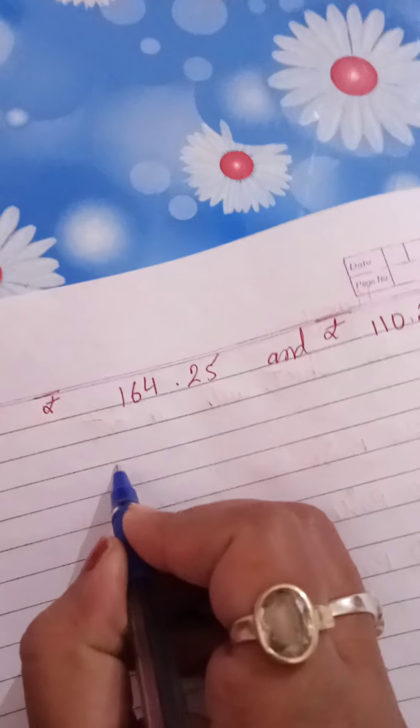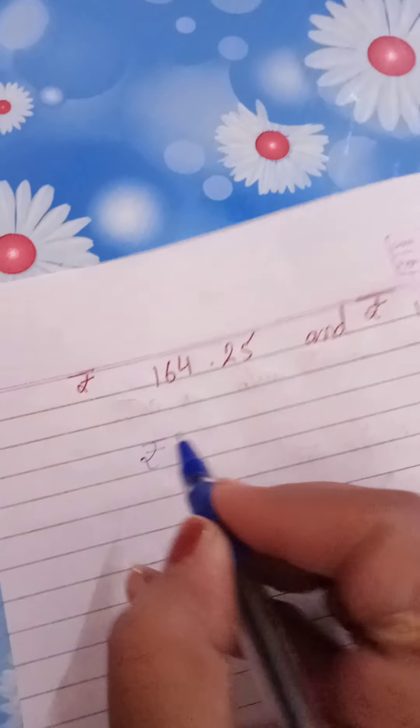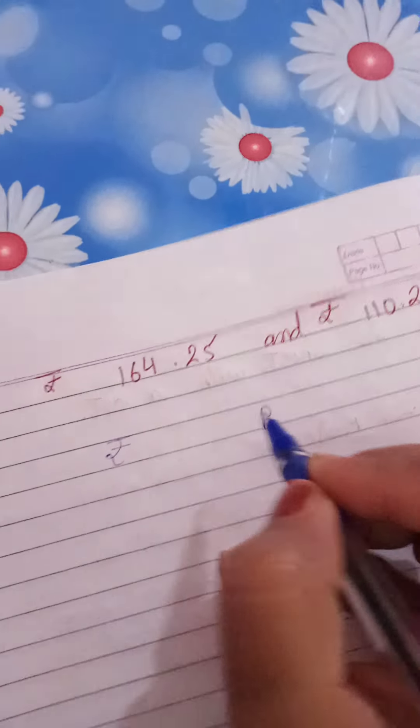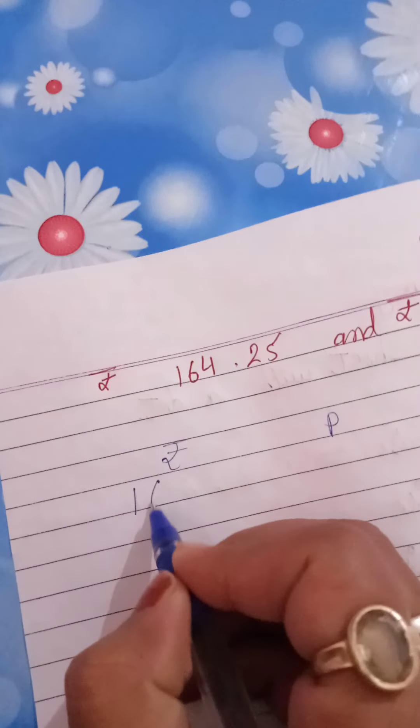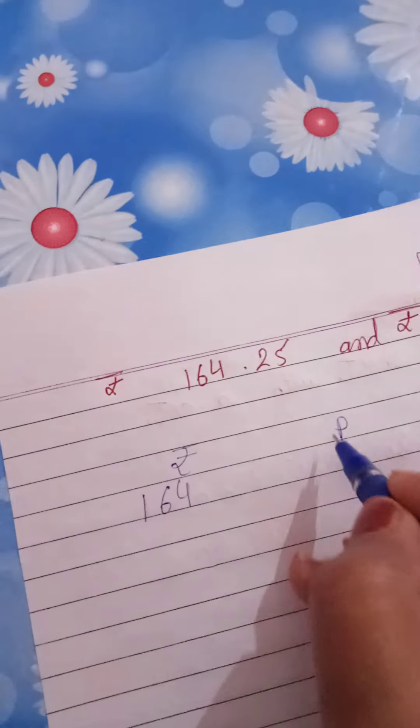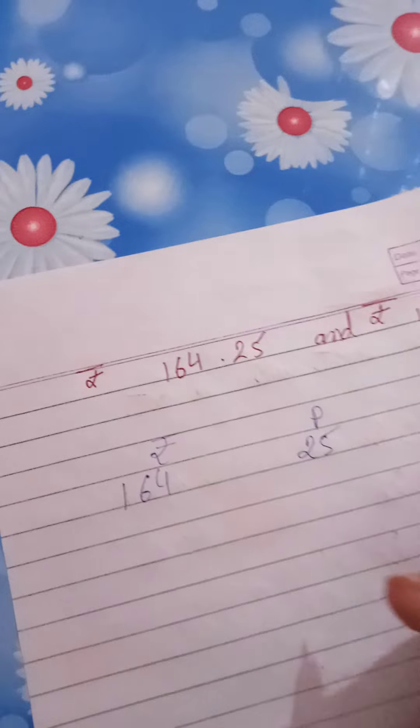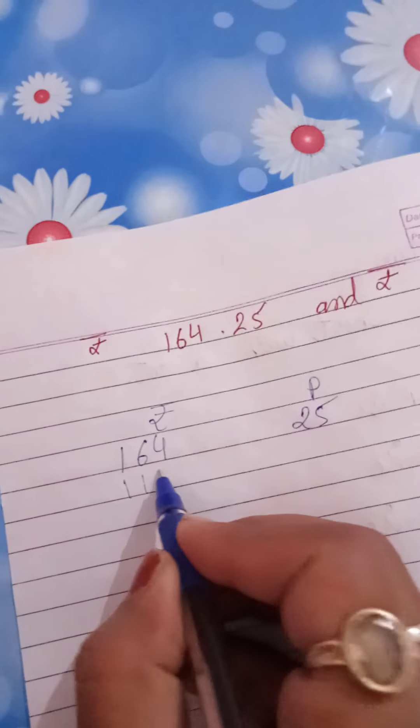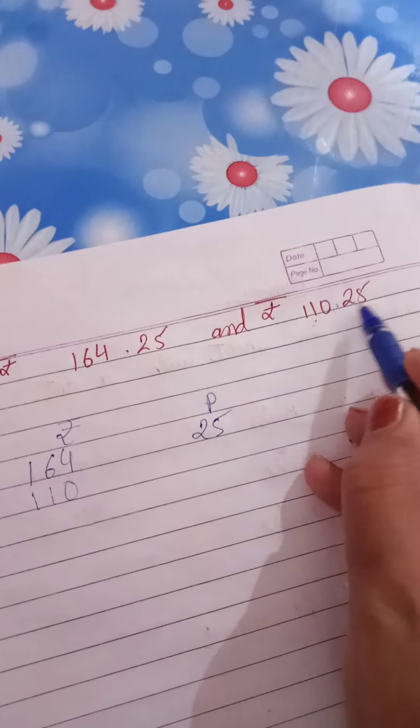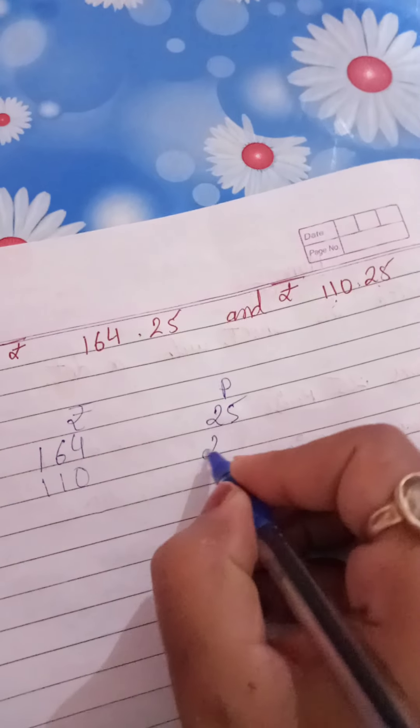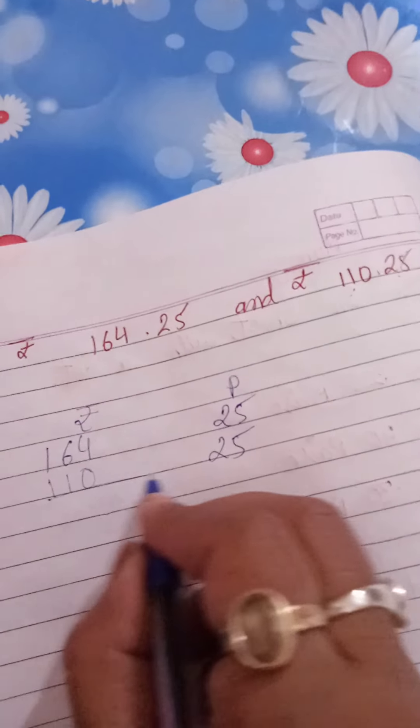Now take one more question. So what is the first step? To make the column. Rupees 50, so rupees 164.25, rupees 110.25, rupees 50. Now what will we do?